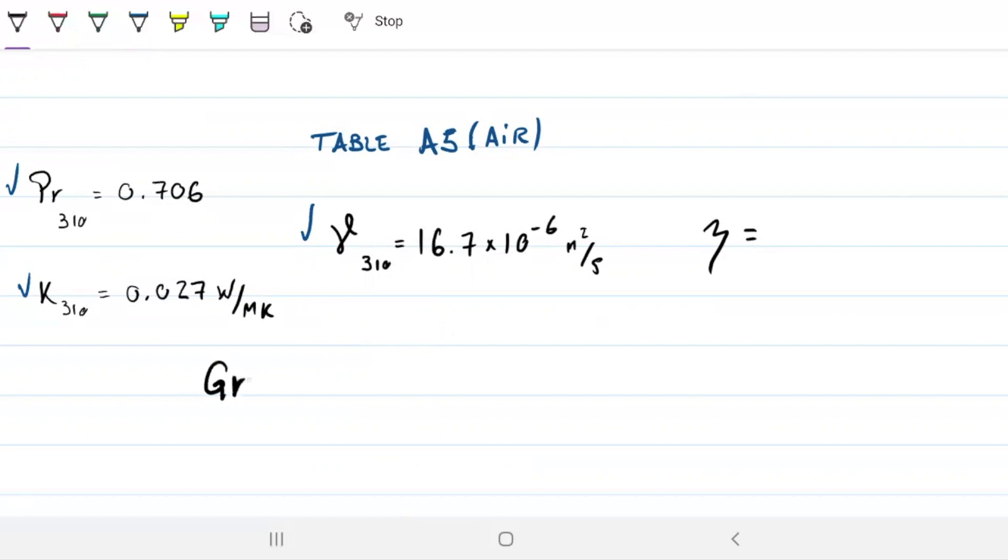The other thing is we're going to need to remember how to calculate Grashof number. Let's write down the two forms: gravity times beta times delta T times X to the third divided by viscosity squared, or gravity times beta times delta T times X to the third divided by kinematic viscosity squared. So check it out. I have X from the drawing, delta T from the problem, we grab this from the table, and we have gravity from life - this is gravity on earth.